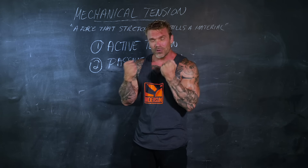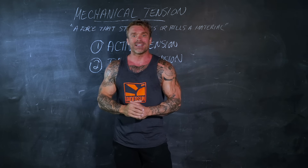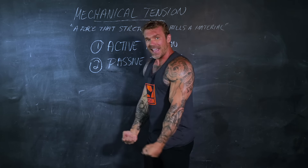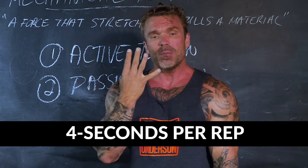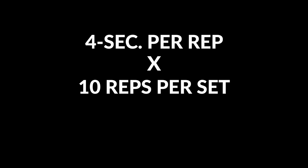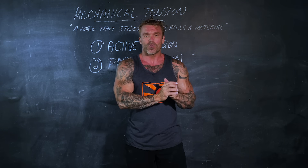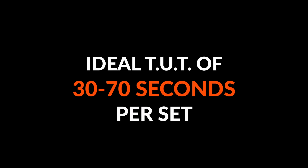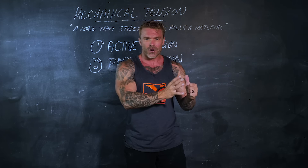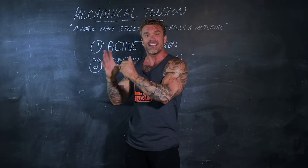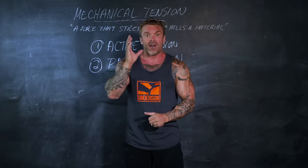Time under tension refers to how long you're holding that load. For example, doing 10 reps with a one-second concentric, one-second isometric, and two-second eccentric gives four seconds per rep. Multiplied by 10 reps, that's 40 seconds — right within the ideal range of 30 to 70 seconds of total time under tension needed to trigger muscle hypertrophy.